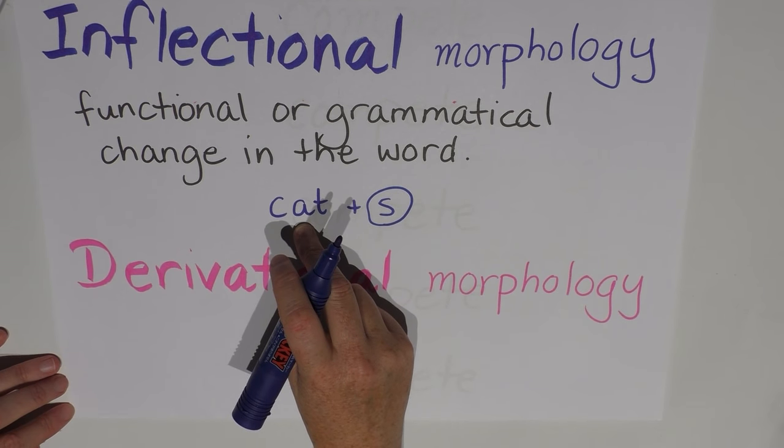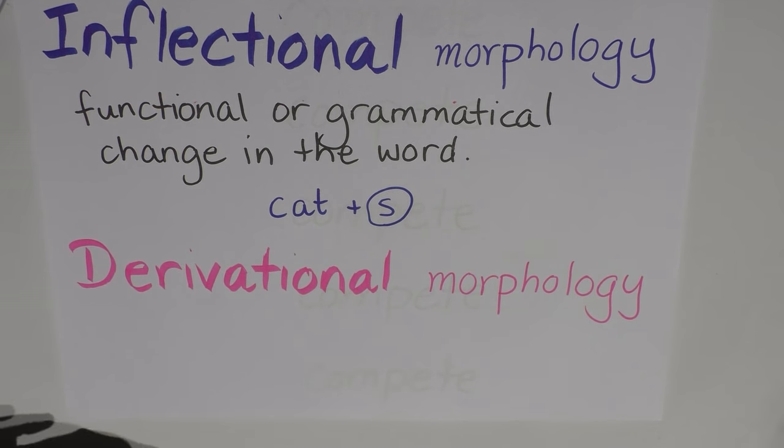This S that we're adding on to the back of cat is a grammatical change, it's telling us that there is more than one. So that's an inflectional morphological change.